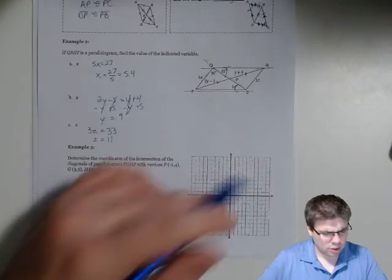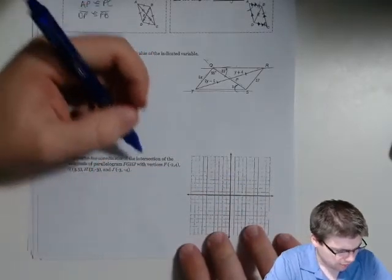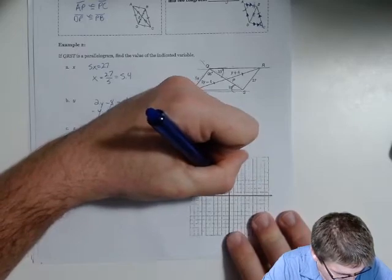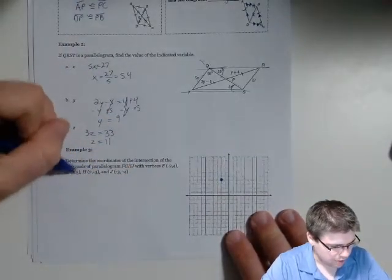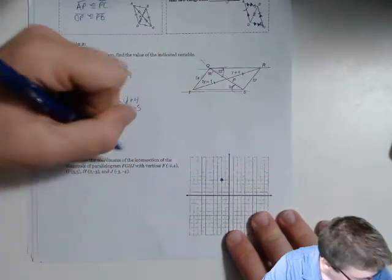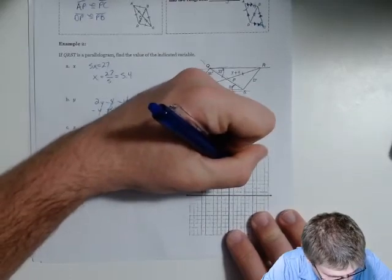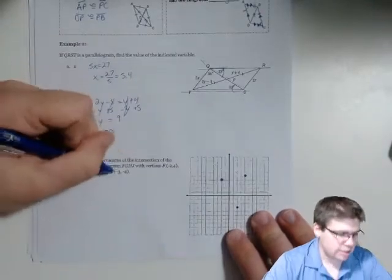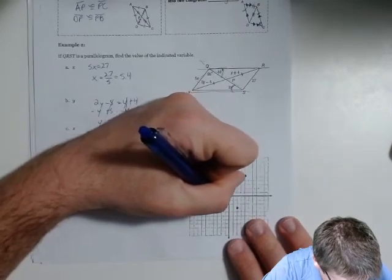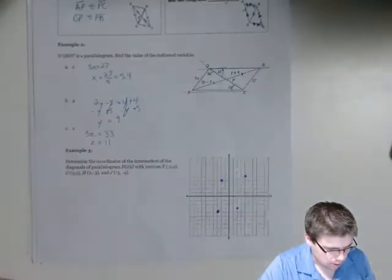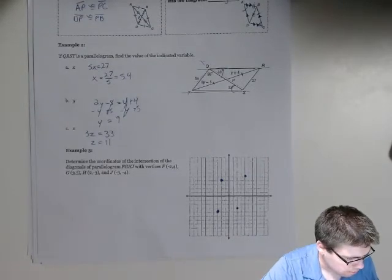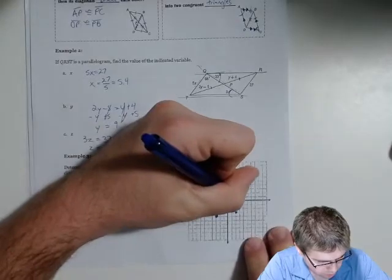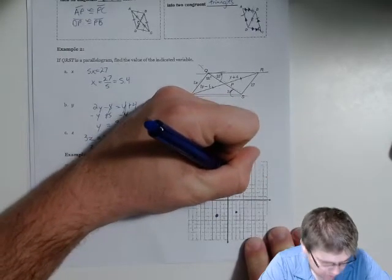Finally, determine the coordinates of the intersection of the diagonals of parallelogram FGHJ with vertices at F at negative 2, 4; G at 3, negative 5; H at 2, negative 3; and J at negative 3, negative 4. I made a plotting error but here's my corrected parallelogram. The feature we want to use is that the diagonals bisect each other, so the intersection point is just the midpoint of those two diagonals.